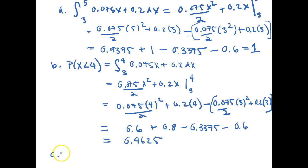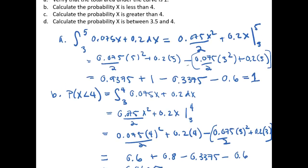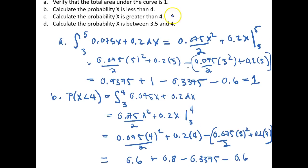So now we want to know, if we scroll back up, it says calculate the probability x is greater than 4. So how can we find that?